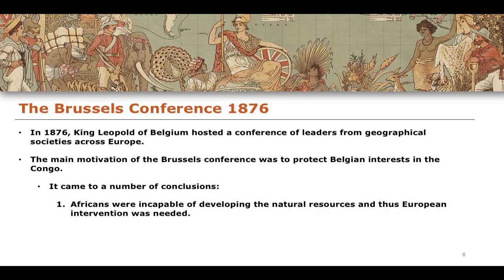The Brussels Conference came to a number of conclusions. Firstly, it concluded that Africans were incapable of developing the natural resources on their own land, and it was therefore up to Europeans to intervene to properly extract and utilize these resources. This framing is both paternalistic and patronizing - suggesting Europeans were going in to help - but in reality the European countries were acting in their own best interest. They were not going to develop natural resources for African countries to profit from; they were extracting them for the empires' own benefit. This is really the crux of imperialism.